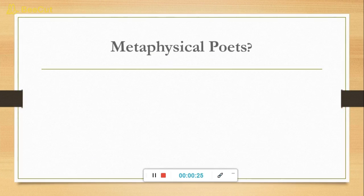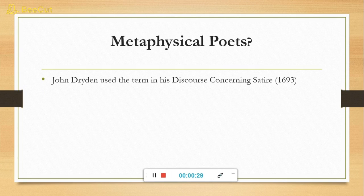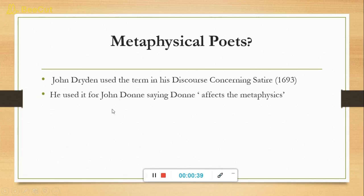Let's look at the term metaphysical poets. The term metaphysics was first used by John Dryden in his work Discourse Concerning Satire, written in 1693. He used the term in the case of John Donne, saying that John Donne affects the metaphysics.